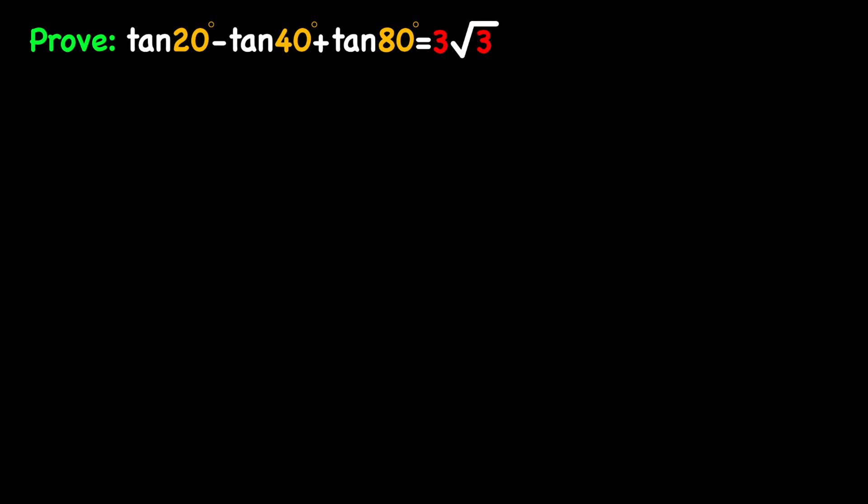On the left hand side we have tangent of 20 degrees, 40 degrees, and 80 degrees, so we need to work with three different angles. But it would be much simpler to just work with one angle. To do that, let's get rid of the 40 and the 80 and just work with the 20. We can replace the 40 with 60 minus 20 and replace the 80 with 60 plus 20.